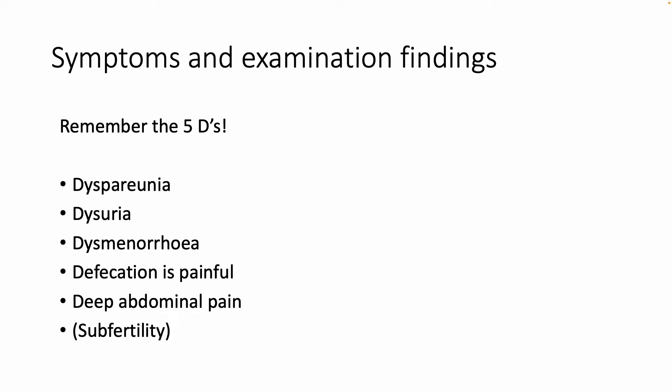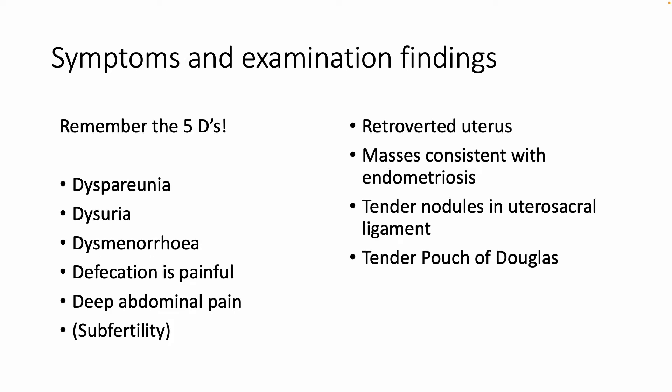In terms of what you would find on a physical exam on a patient with endometriosis, the patient might have a retroverted uterus. You could palpate some masses consistent with endometriosis — those could be tender nodules in things such as the utero-sacral ligament, or a tender Pouch of Douglas. A physical exam is a great first step, but it is not enough on its own to determine whether someone might have endometriosis, so you should consider other investigations.